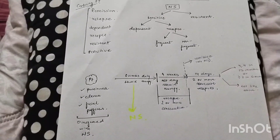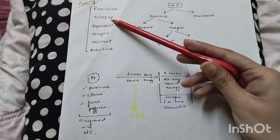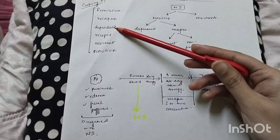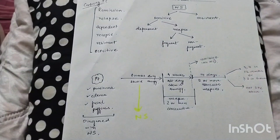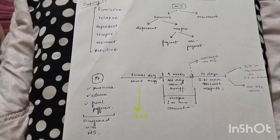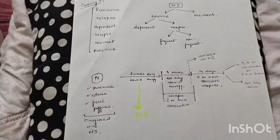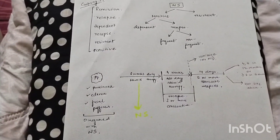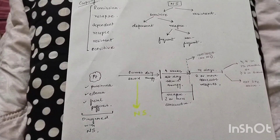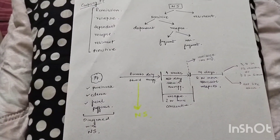Do you find the terms related to nephrotic syndrome like remission, relapse, dependent, resistant, and sensitive confusing? Like, what is remission in nephrotic syndrome? What is relapse? What is steroid dependent nephrotic syndrome? What is steroid sensitive nephrotic syndrome? What is steroid resistant nephrotic syndrome? If you find these terms confusing, then this video is the solution for you.